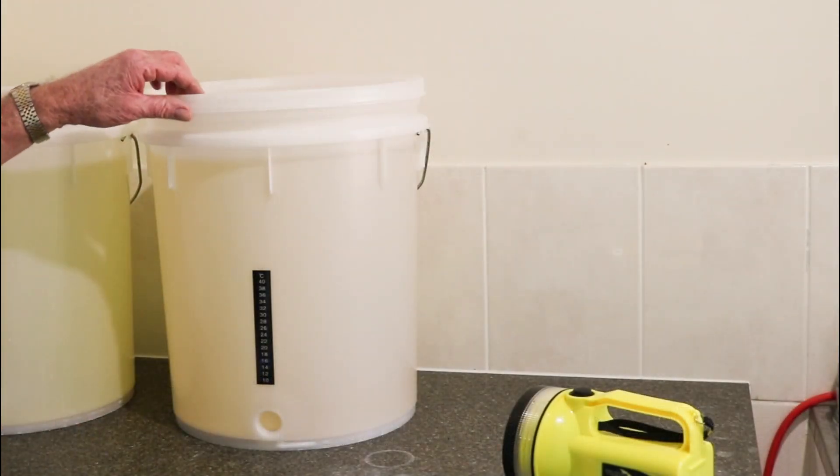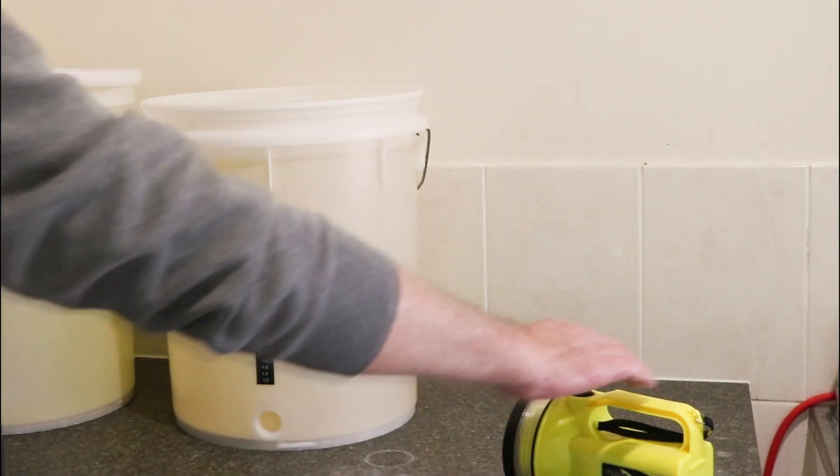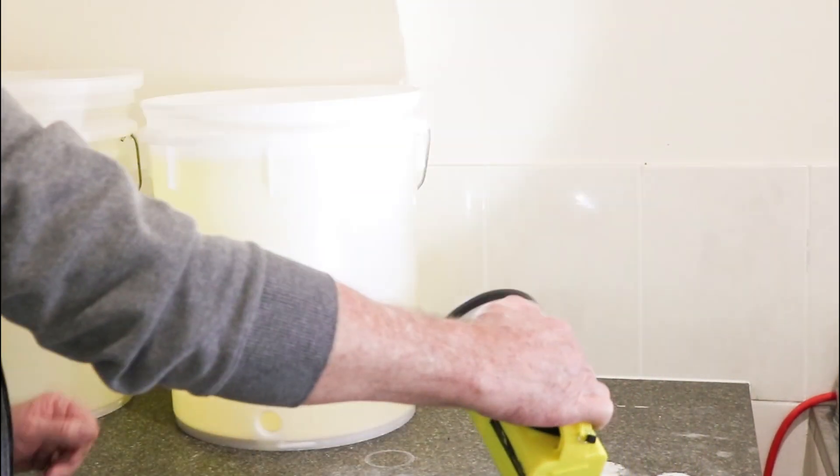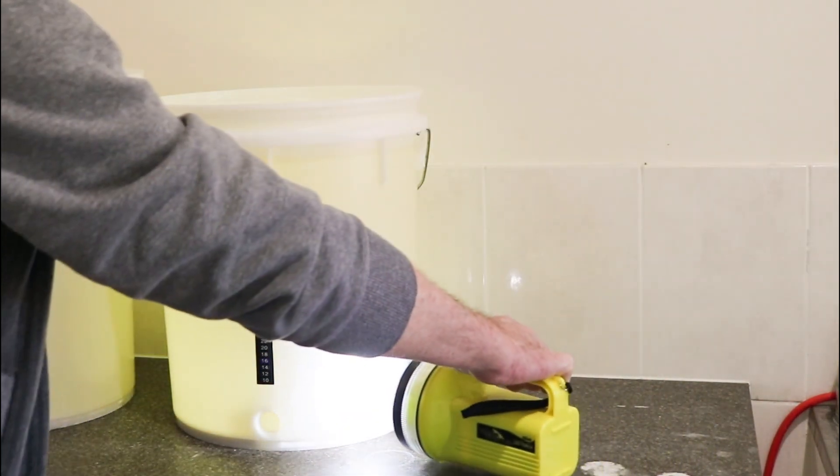This is part two of our Making Vodka with Brewers Juice series. This is where we actually look at transferring the wash into the distilling unit and making it into alcohol.